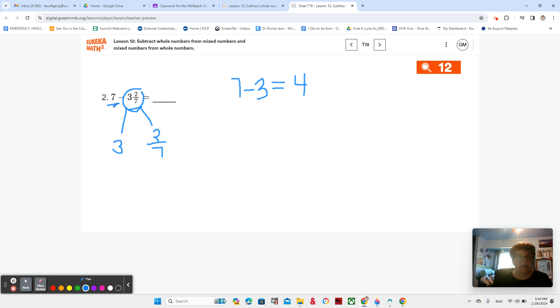So basically, I have 7 pizzas. I'm giving away 3 pizzas. That leaves me with 4 pizzas. But I'm also giving away 2 sevenths for whatever reason. So now I have to take what's left from my whole numbers and subtract my 2 sevenths. 4 minus 2 sevenths.